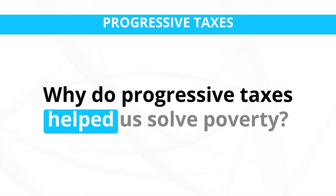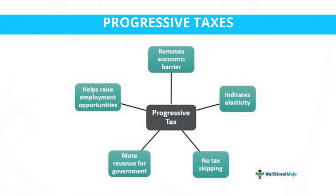Progressive taxes can help to solve poverty by addressing income inequality and redistributing resources to support those with lower incomes. When wealthier individuals and corporations are taxed at higher rates, the government can collect more revenue to fund social welfare programs and public services that benefit the less privileged. These programs may include education, health care, affordable housing, job training, and other initiatives that directly support those living in poverty, helping alleviate poverty and provide opportunities for upward mobility.